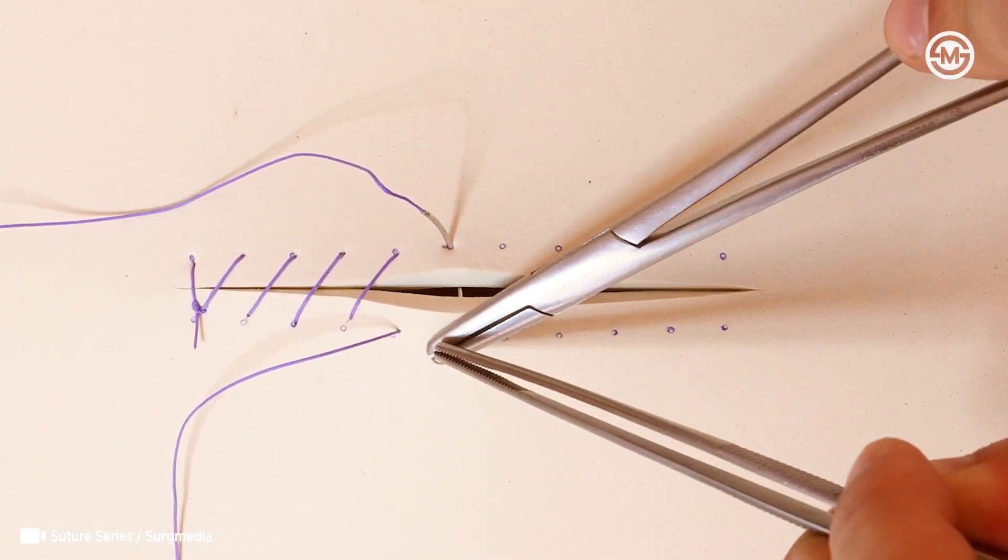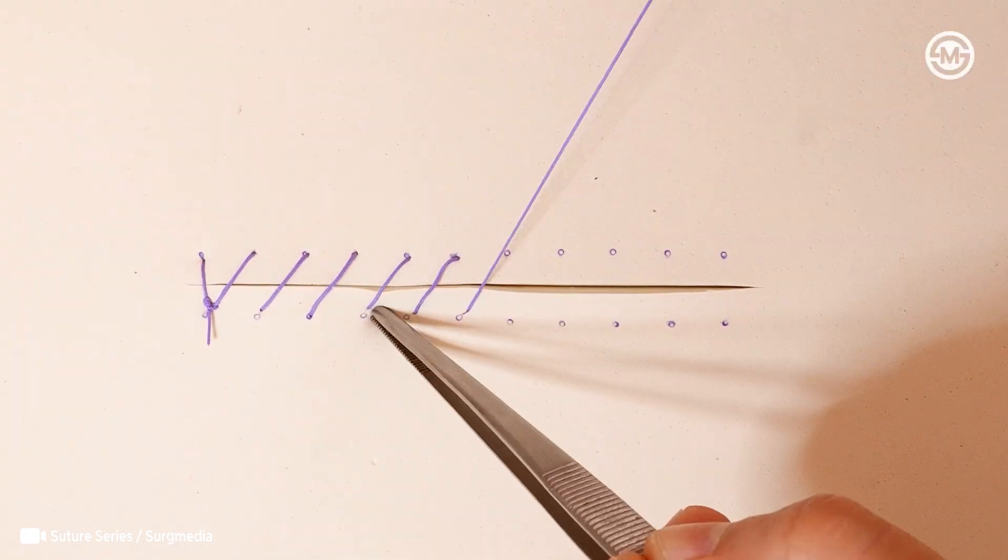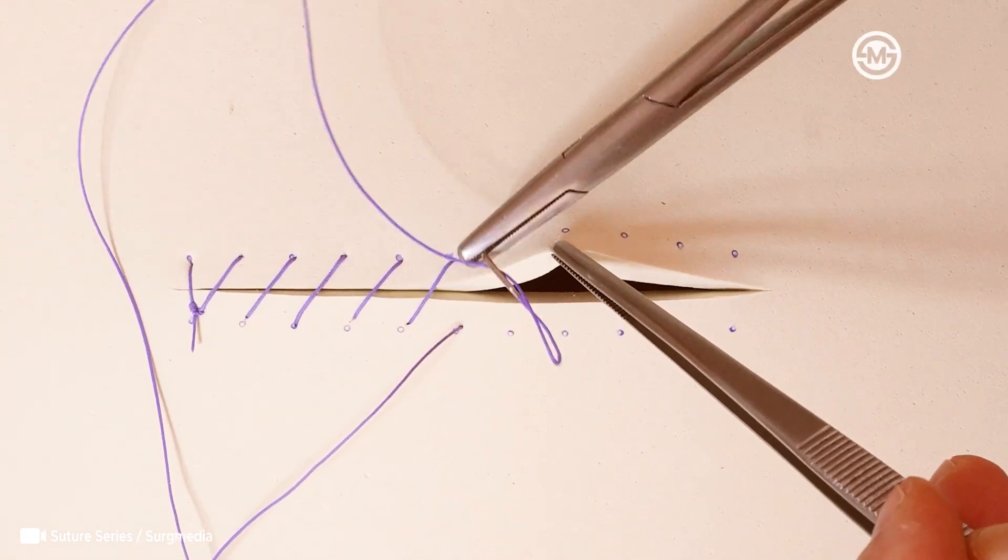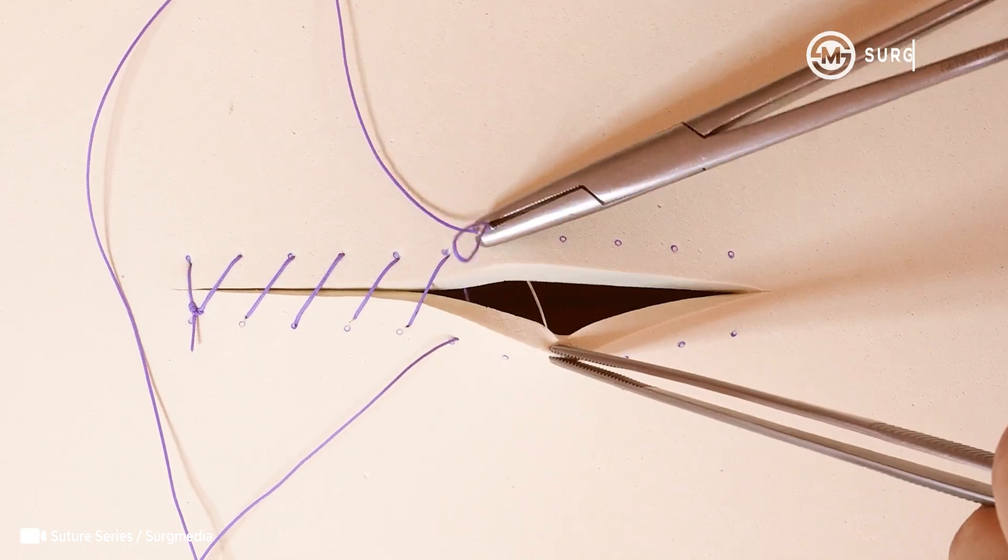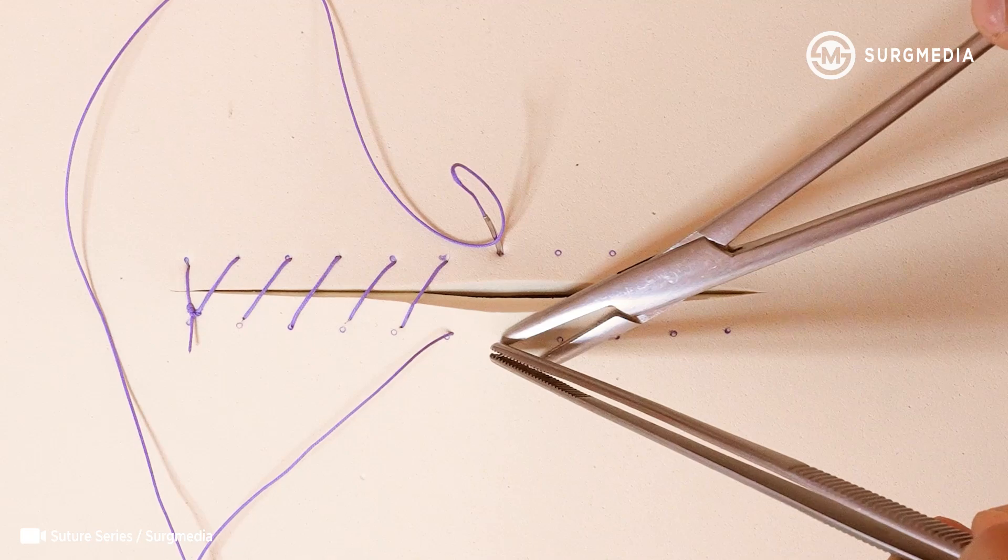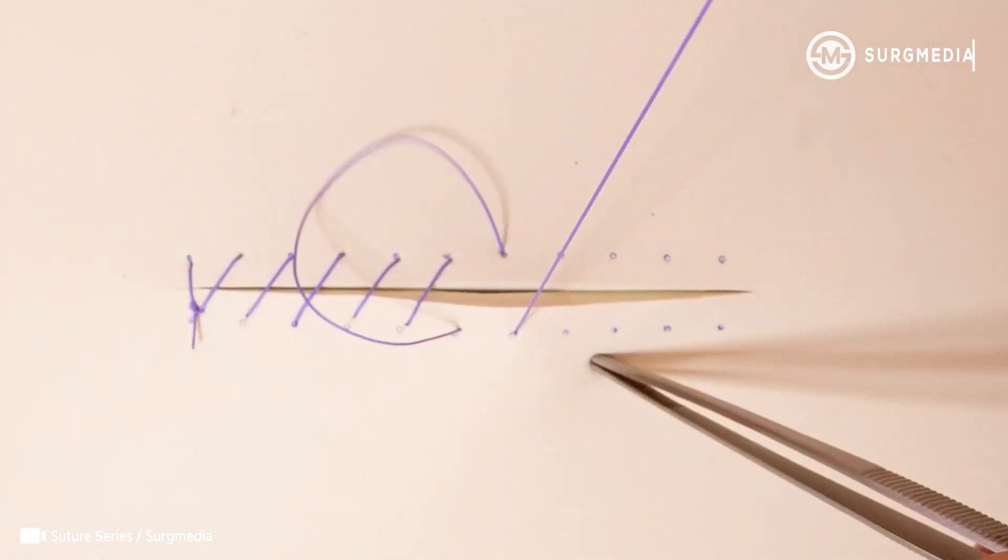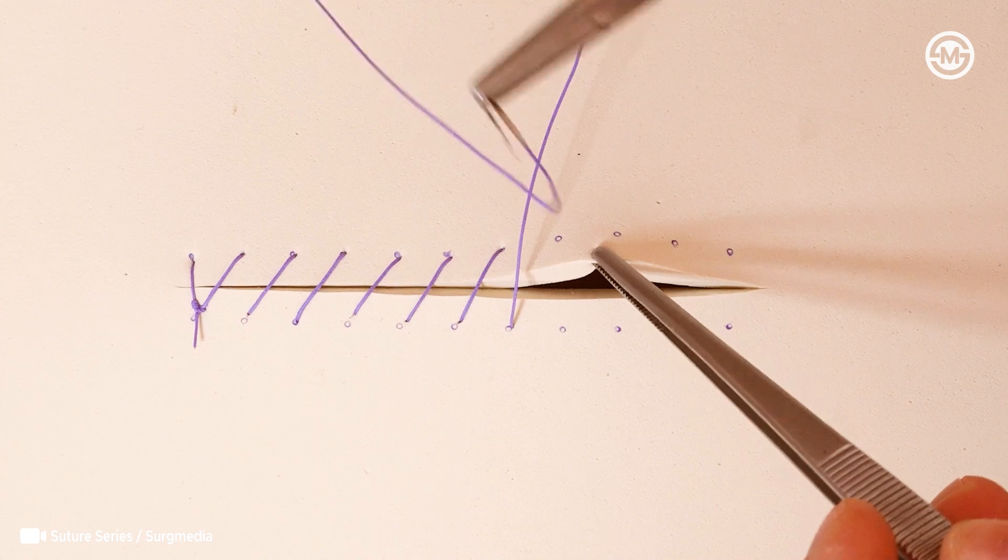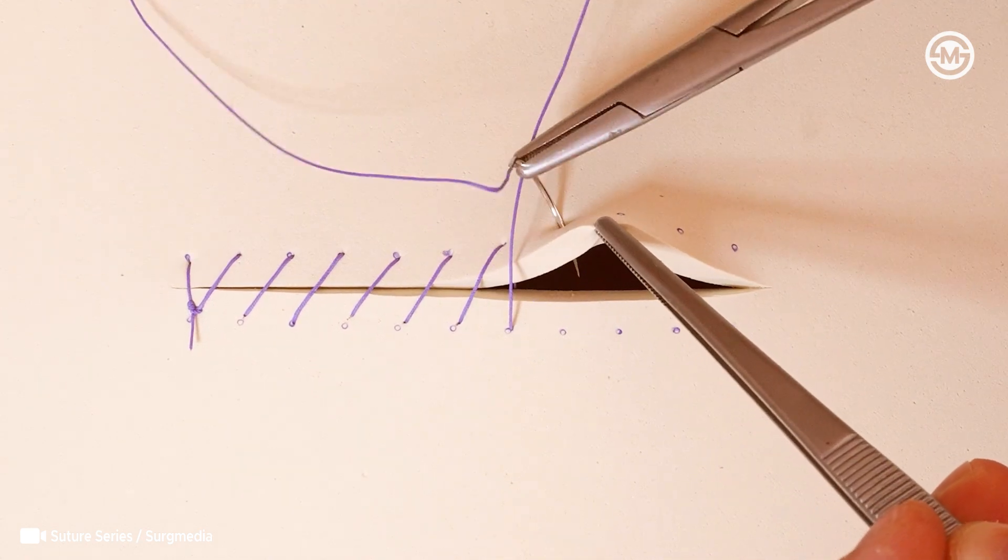So why do surgeons love this technique? For one, it's fast. It saves valuable time, especially in long procedures. It also applies even tension across the wound, which helps reduce tissue stress. And because you're only tying knots at the beginning and end, there's less foreign material left behind, meaning a lower risk of inflammation or reaction.